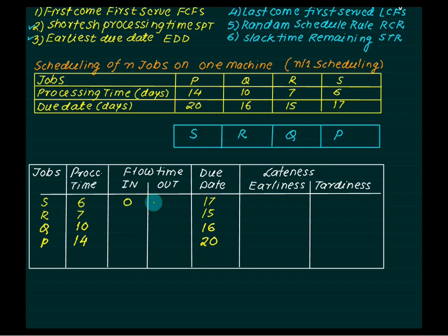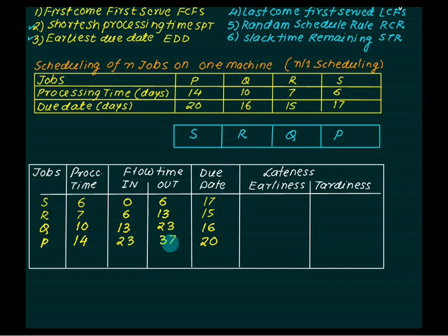Processing starts at time 0. Job S finishes on day 6. On day 6 we take job R; adding 7 days gives day 13. On day 13 we take job Q; it takes 10 days, so it finishes on day 23. On day 23 we take job P; adding 14 days gives day 37. So all four jobs are completed by day 37 — this is the makespan.